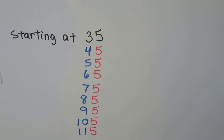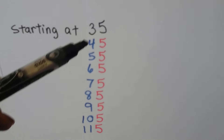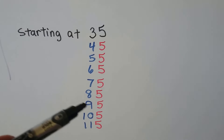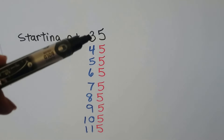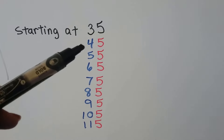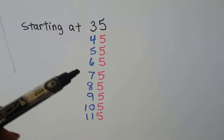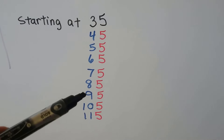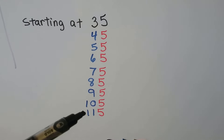If we're starting at 35, the tens will go up 1 — see: 3, 4, 5, 6, 7, 8, 9, 10, 11 — and the ones are staying a 5. We have 35, 45, 55, 65, 75, 85, 95, 105, 115.